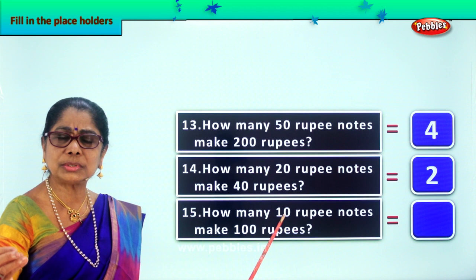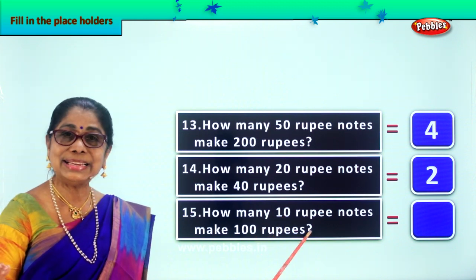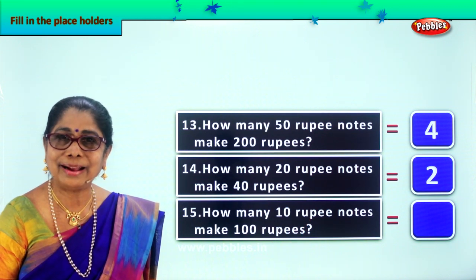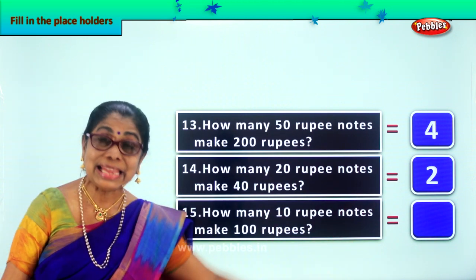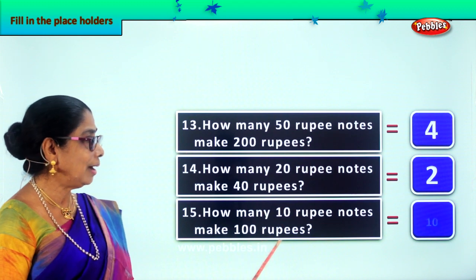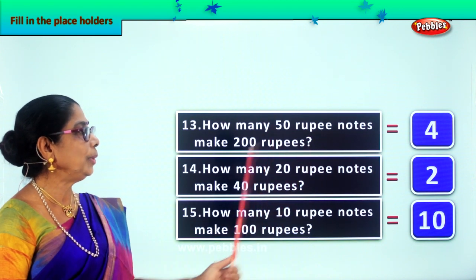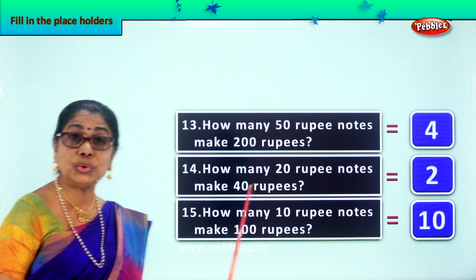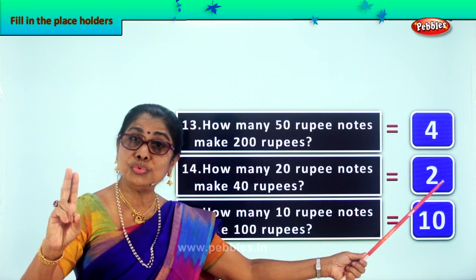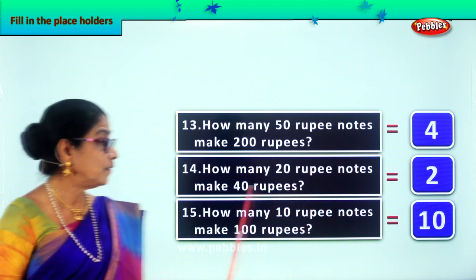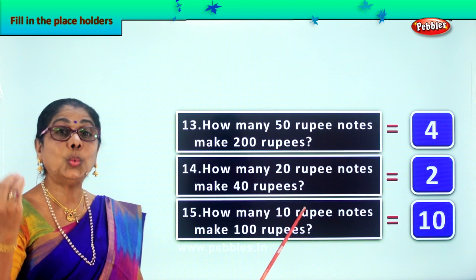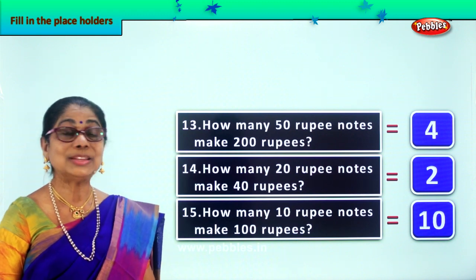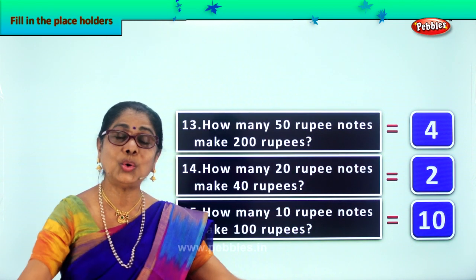Finally, how many 10-rupee notes do we need to make 100 rupees? The 10-rupee note is brown. How many do we need to make 100? 10 tens are 100. So we need 10 ten-rupee notes to make 100 rupees. We write 10. How many 50-rupee notes to make 200? We need 4. How many 20-rupee notes to make 40 rupees? We need 2. And how many 10-rupee notes to make 100? We need 10. So we correctly filled in the placeholders — hope you enjoyed.